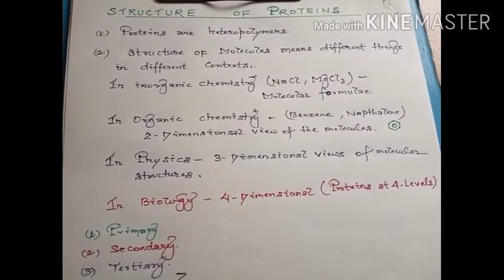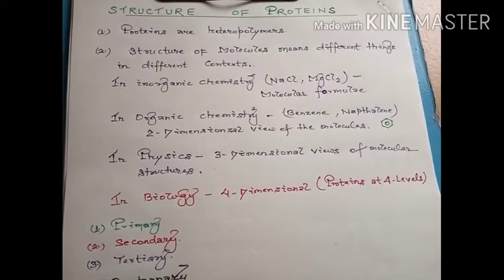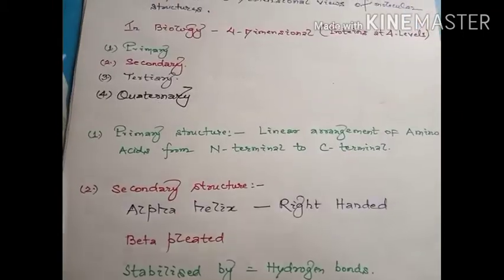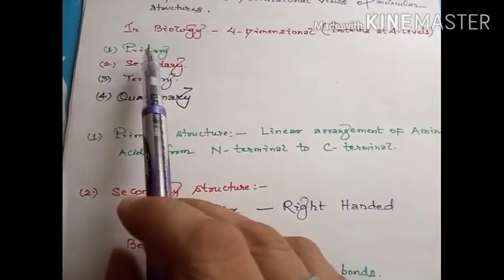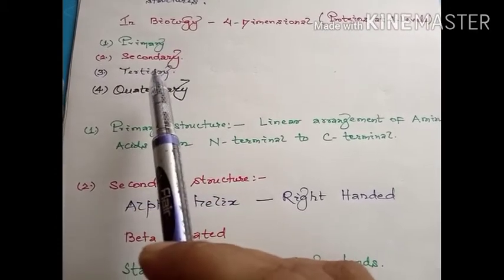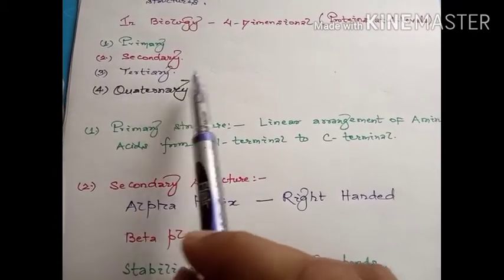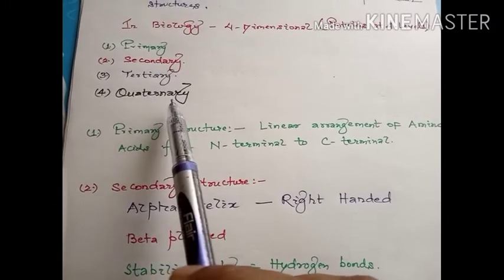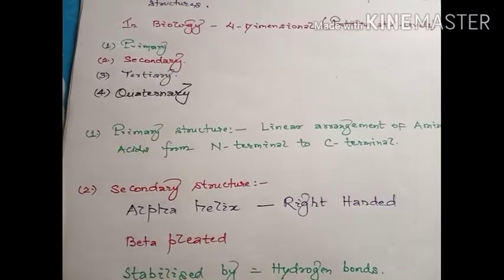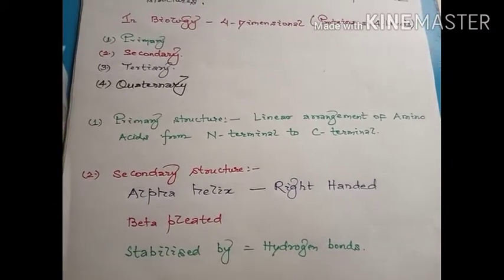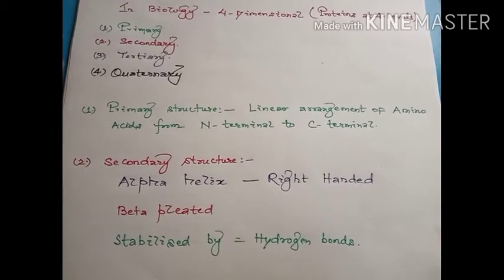The four levels are as follows: primary structure, secondary structure, tertiary structure, and the fourth is quaternary structure. We will discuss one by one — starting with the primary structure.